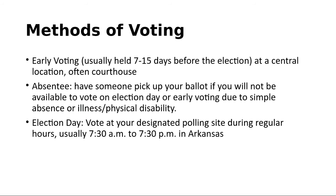You have several voting options. Early voting is usually held seven to fifteen days before the election at a central location, often the courthouse or another community building. You have the right to absentee vote — someone can pick up your ballot or it can be mailed to you if you won't be able to vote on election day due to absence, illness, or physical disability; make arrangements with your county clerk. On election day — which is my favorite time to vote — you go to your designated polling site during regular hours, usually 7:30 a.m. to 7:30 p.m. in Arkansas, but check your polling location closer to the election.